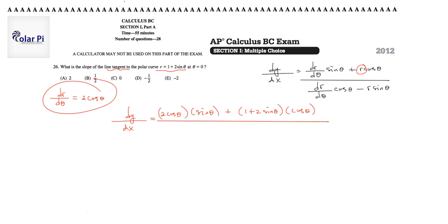Dr/d theta, again, now we're working on the denominator. Dr/d theta, again, is 2 cosine theta. So 2 cosine theta times cosine theta. And then minus r, and then minus r, 1 plus 2 sine theta, times sine theta. Got it.